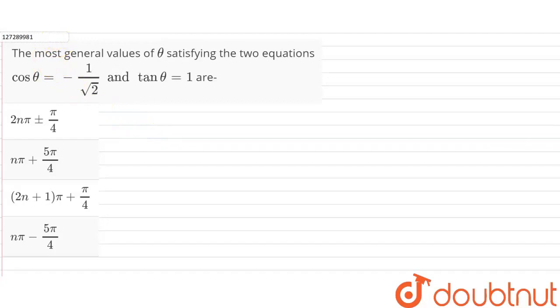The question is, find the most general value of theta. These are my two equations: cos equals minus 1 by root 2, and tan equals 1.